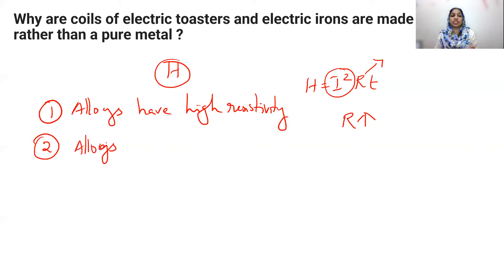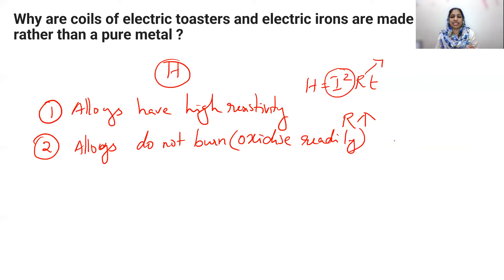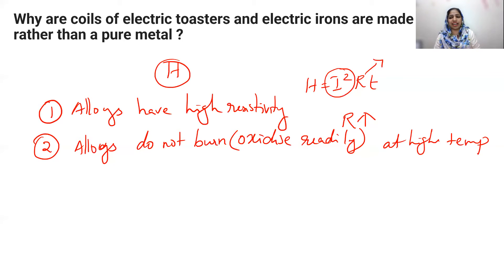Alloys do not burn or oxidize readily at high temperatures. This is another reason why alloys are preferred over pure metals for heating elements in toasters and irons.